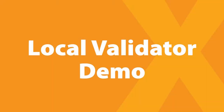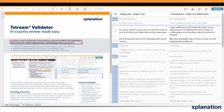Hello, and welcome to this short introduction to the T-Stream Validator. To access the Validator, you need to login to the Explanation Portal. You will receive a link, a username, and also a password. You should use these to login.